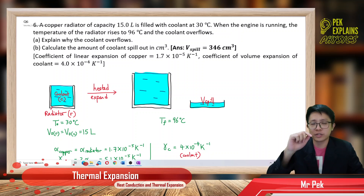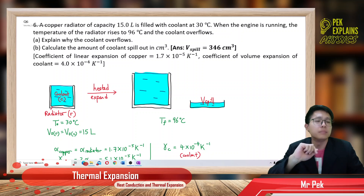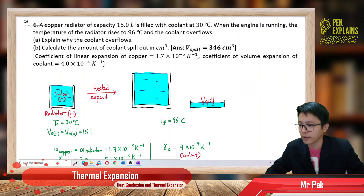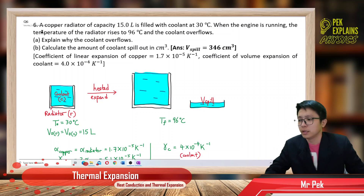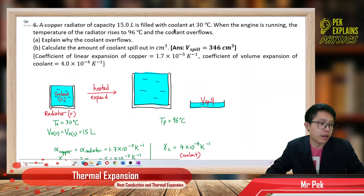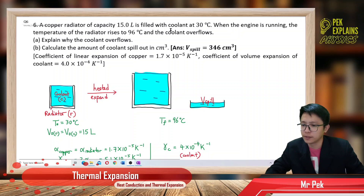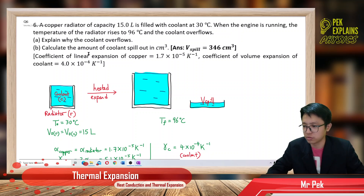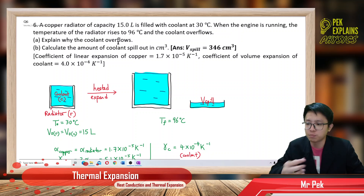Now question 6 in thermal expansion. Let's read together. A copper radiator of capacity 15 liters is filled with coolant at 30 degrees Celsius. When the engine is running, the temperature of the radiator rises to 96 degrees Celsius and the coolant overflows. Explain why the coolant overflows — why does the coolant spill out?